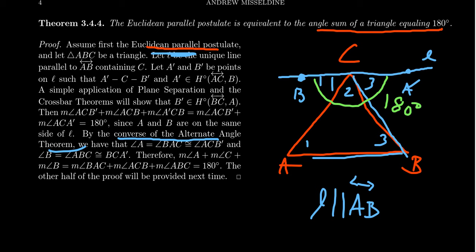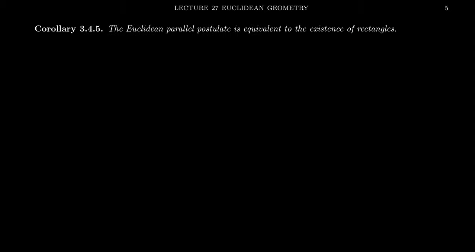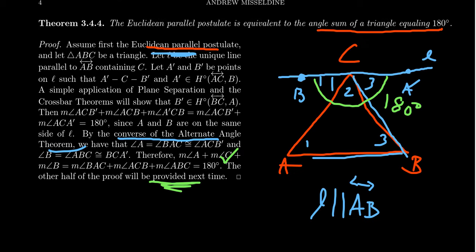We're going to prove the other direction in our next lecture, Lecture 28. As a homework exercise, note that EPP is equivalent to the existence of rectangles: in Lecture 26 we proved the all-or-nothing theorem — if you have one 180-degree triangle, all triangles are 180-degree triangles. In the process we showed that 180-degree triangles imply the existence of rectangles. Use that previous theorem with the all-or-nothing theorem, and you get that EPP is equivalent to the existence of rectangles. That is left as a homework exercise. We'll complete the proof of Theorem 3.4.4 next time in Lecture 28.